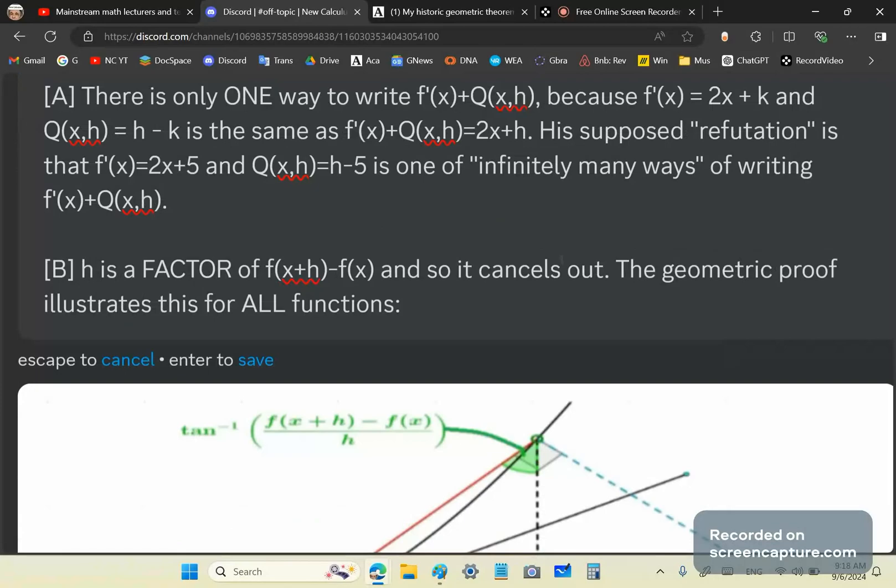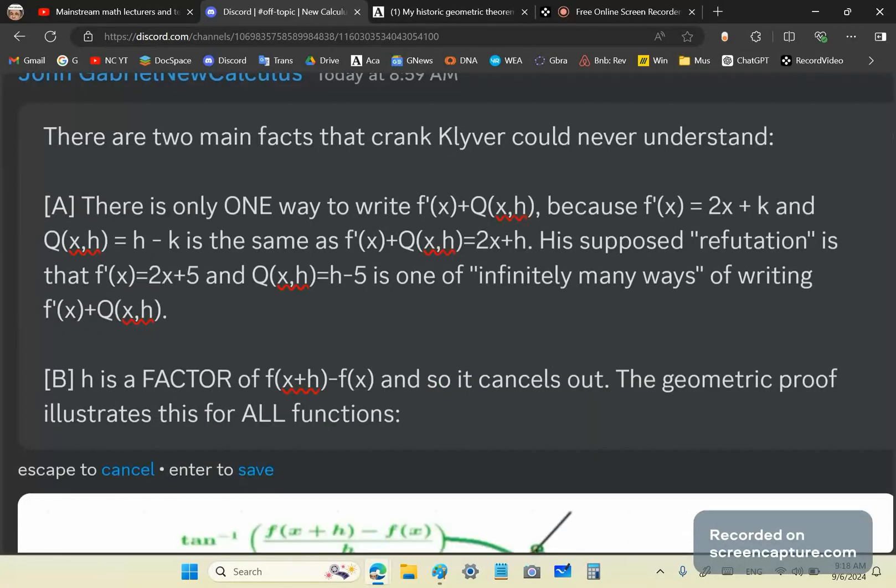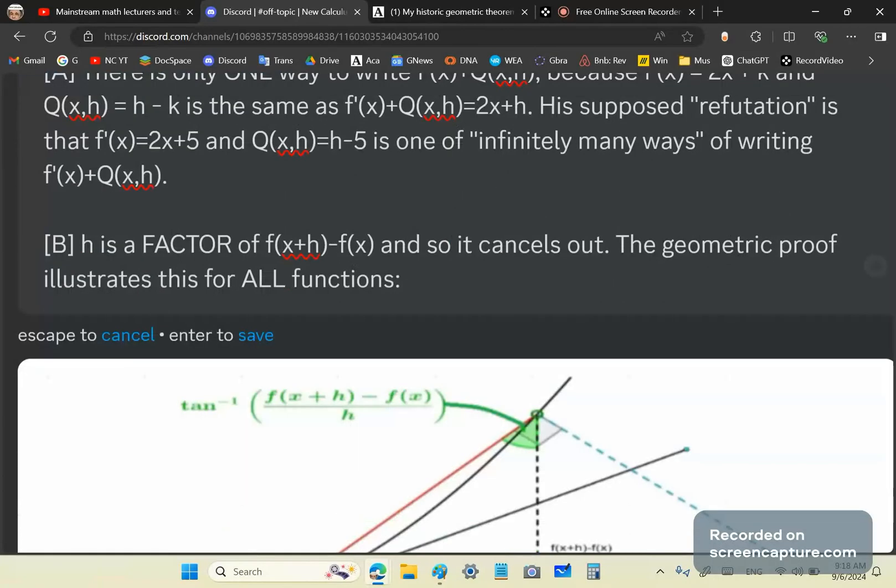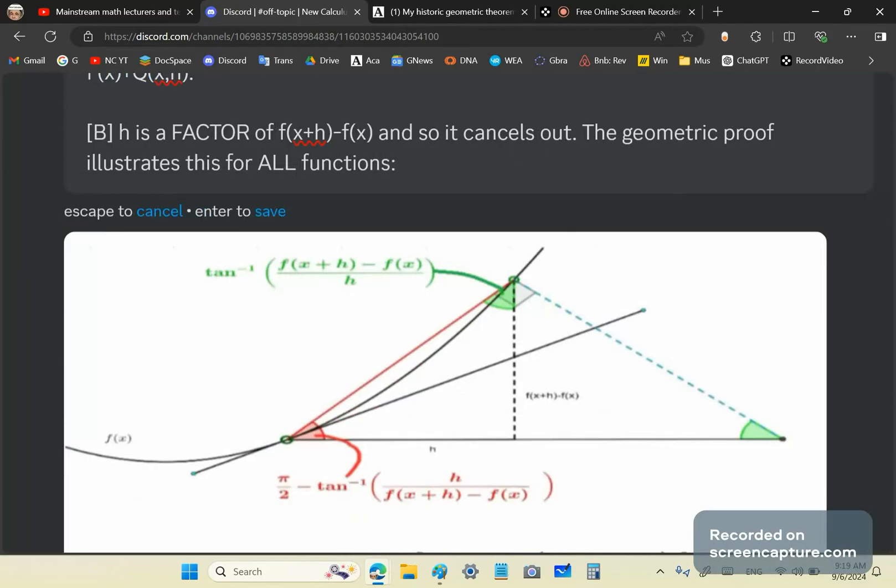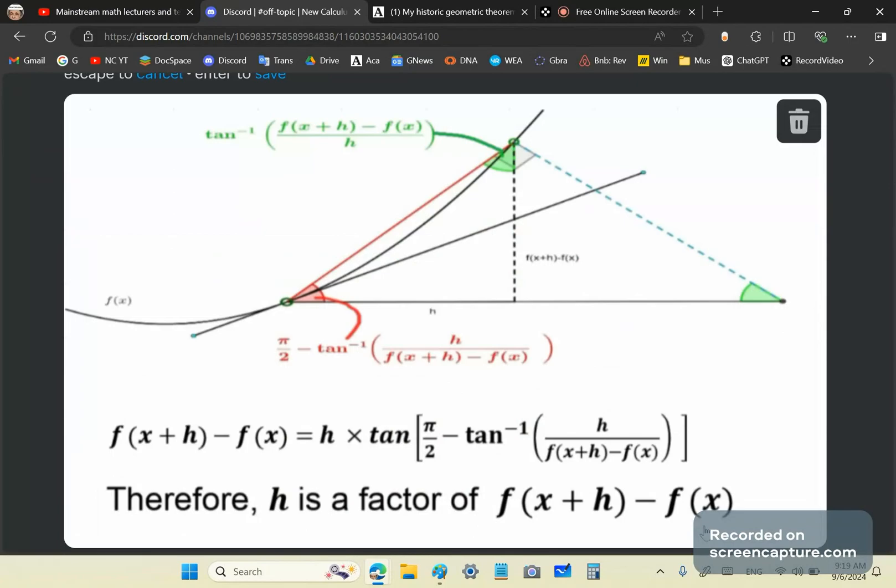Then, the second fact that Crank Klyver could never understand is that h is a factor. Well, he doesn't even know what a factor is, but that's another story. H is a factor of f of x plus h minus f of x, and so it cancels out. What's the proof of that? Well, here's the proof of that. It's simple geometry or trigonometry, whatever you prefer to call it. Trigonometry is just a special form of geometry. It's circular geometry.